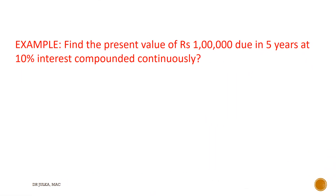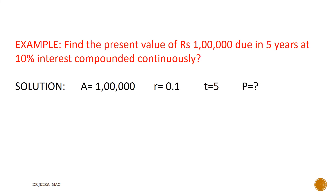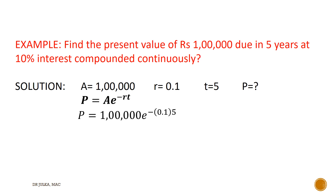One more example on present value: find the present value of ₹1 lakh due in 5 years at 10% rate of interest compounded continuously. Here A equals ₹1 lakh, R equals 0.1, and T equals 5 years. When interest is compounded continuously, the formula for present value equals A multiplied by E raised to the power minus RT. Putting A equals 1 lakh, R equals 0.1, and T equals 5, using a simple calculator we get the present value of ₹60,651.01.